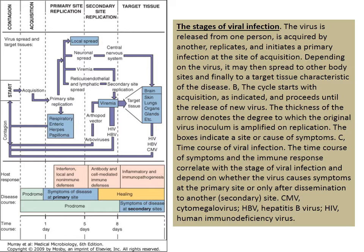In the prodromal phase, your immune system is fighting the virus, and that initial immune activity produces the flu-like symptoms we all recognize — malaise, feeling tired, feeling unwell, feeling that something is coming. That kind of feeling is characteristic in typical viral infections.